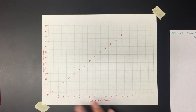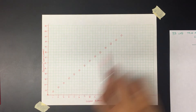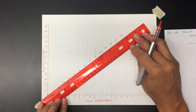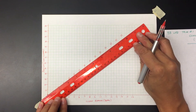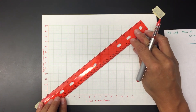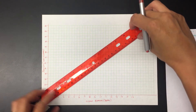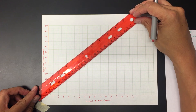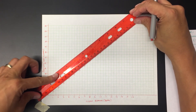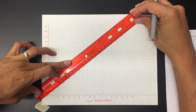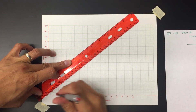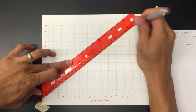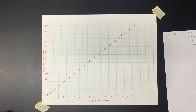Once I've got all my points plotted, I can see that the general trend in my data is a line. I'll take my straight edge and draw a line. I'm going to make sure the line goes through zero, and then try to draw it so that about half the points are on one side of the line and half are on the other side — that's your line of best fit.